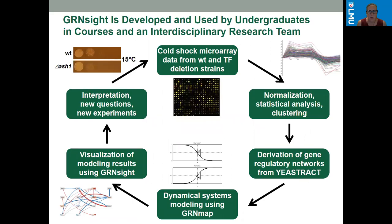GreenSight is developed and used by undergraduates in courses and by our interdisciplinary research team, where we have students collecting data in the wet lab, students doing mathematical modeling, and a computer science team developing the visualization tool of GreenSight — and these students know each other and know that they're working together on this complete project.